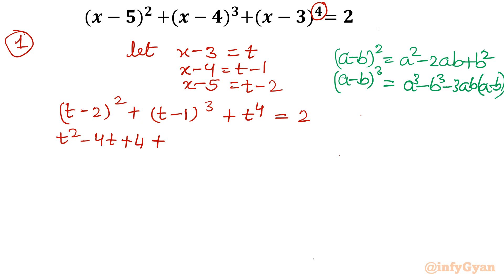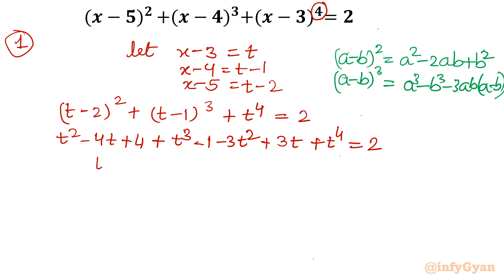Applying (a-b)³ to (t-1)³: I get t³ - 3t² + 3t - 1. And t⁴ remains unchanged, because that term has no binomial expansion needed. So on simplifying the LHS, I get t⁴ + t³ - 2t² - t + 3.